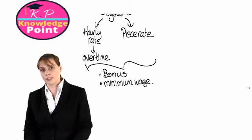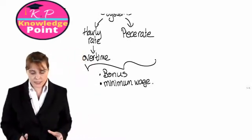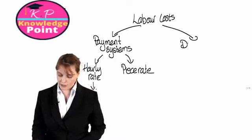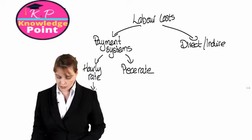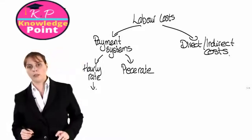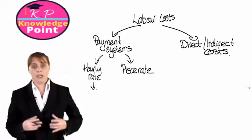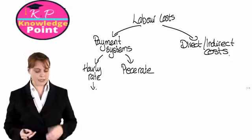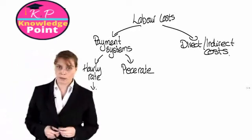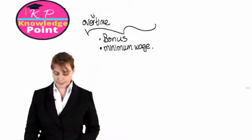Once we understand the different payment systems that might apply, we are then going to look at splitting out our labor costs into direct and indirect costs. For the rest of this session we will consider payment systems, and we're going to look at how the cost behavior of each system would appear on a graph.